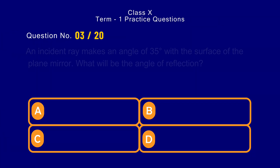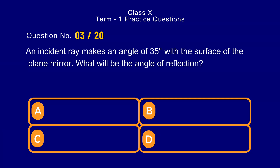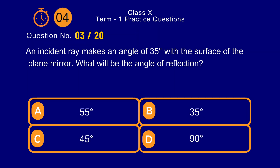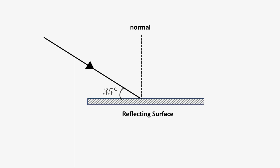Question number 3. An incident ray makes an angle of 35 degrees with the surface of the plane mirror. What will be the angle of reflection? The correct answer is option a) 55 degrees. As the incident ray makes an angle of 35 degrees with the surface of the mirror, the angle made with the normal will be 90 degrees minus 35 degrees, which equals 55 degrees.